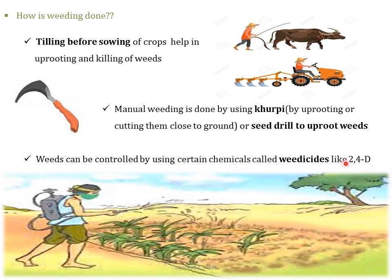Weeds can also be controlled by using certain chemicals called weedicides, like 2,4-D. They are sprayed on the field with the help of a sprayer, but this may affect the health of farmers.